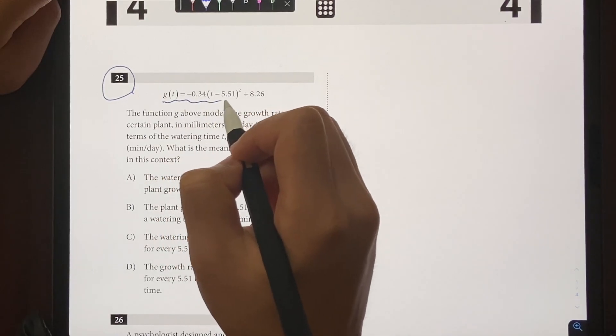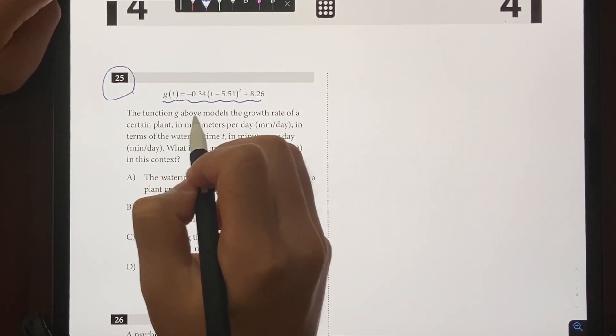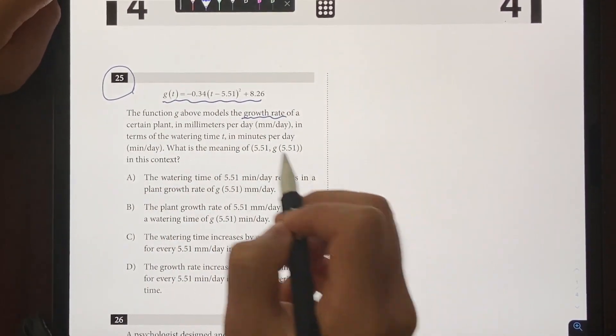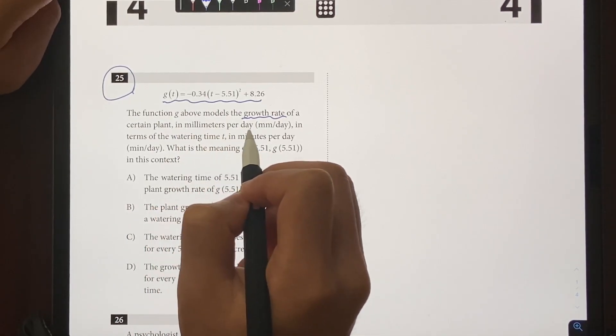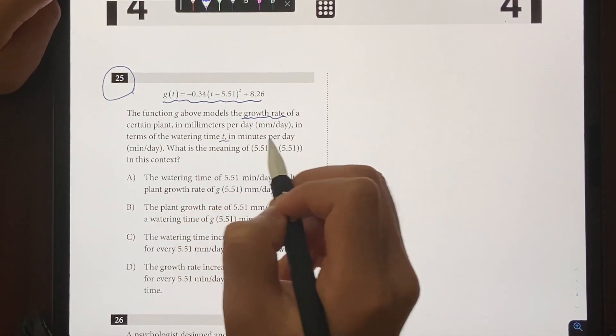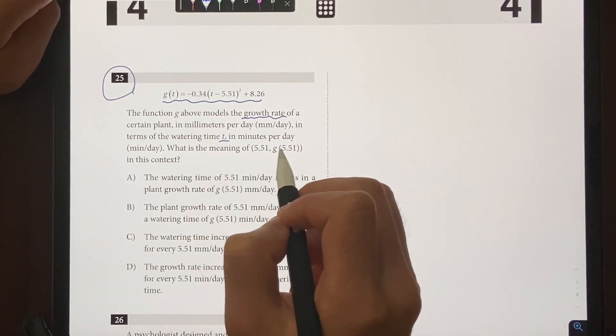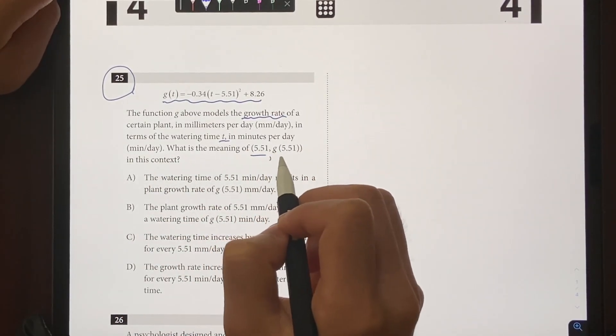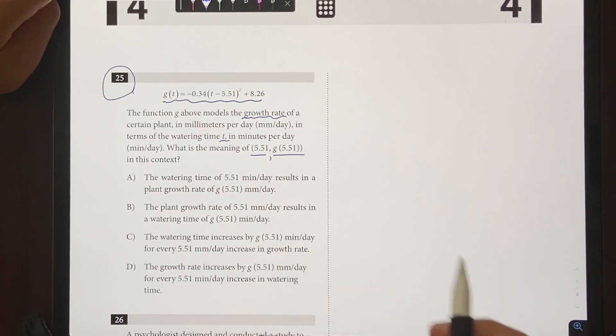Let's get to the video. Let's go over the question. It gives us this function right there, and the function g above models the growth rate of a certain plant in millimeters per day in terms of the watering time t in minutes per day. What's the meaning of (5.51, g(5.51)) in this context?